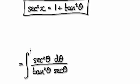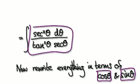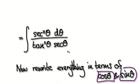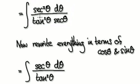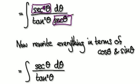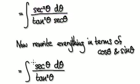Now we rewrite everything in terms of cos(θ) and sin(θ). This expression is quite complicated, so we break everything down into smaller components. We have sec² and sec, and in a way they partially cancel — one sec cancels out with the other — giving us a simpler expression.